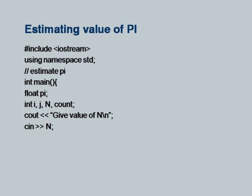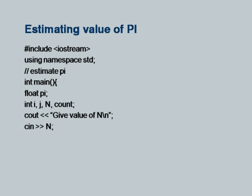The program is actually quite simple. I am using cout and cin with namespace std and iostream, though in a regular C program I would use hash include stdio.h with scanf and printf. The program has variables n, count (the count of points inside the circle), and loop variables i and j. I collect the value of n, giving me n-by-n points.